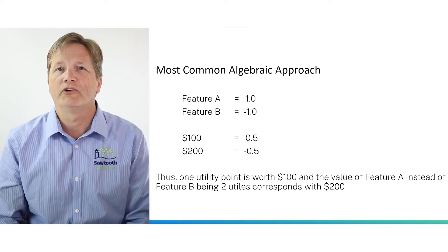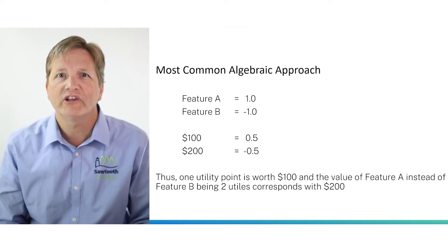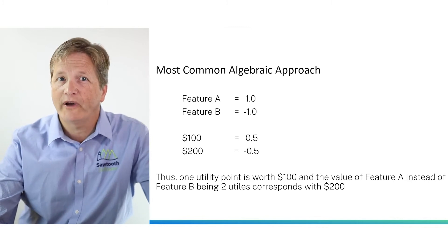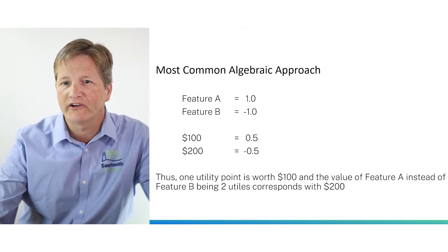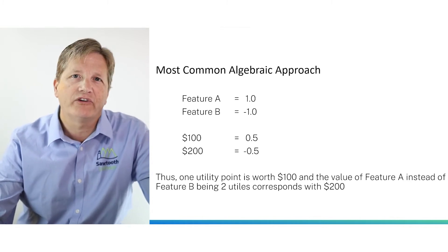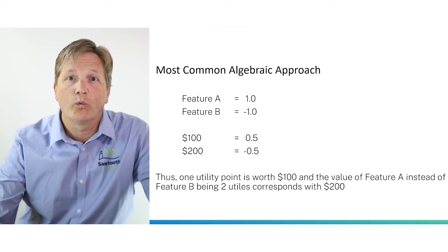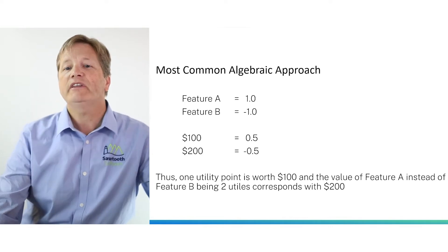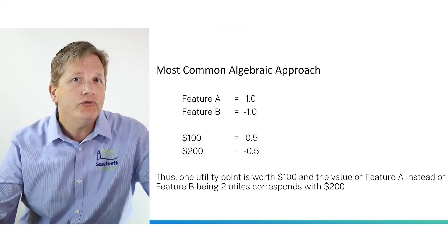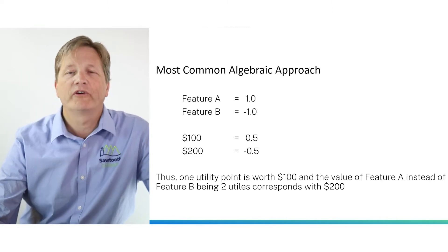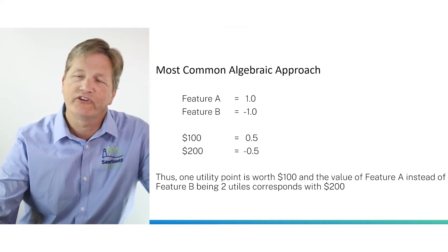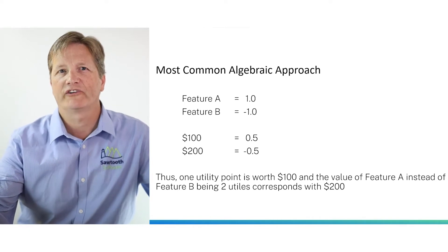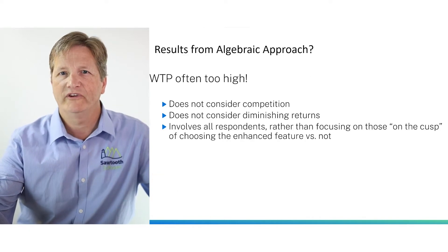The most common approach has been the algebraic approach. Let's imagine that we have a conjoint analysis study with just two attributes, feature and price, and we can see that $100 is worth one utility point more than $200. Given that feature A is worth two utility points compared to feature B, we would infer using simple algebra that feature A is worth $200 more than feature B.